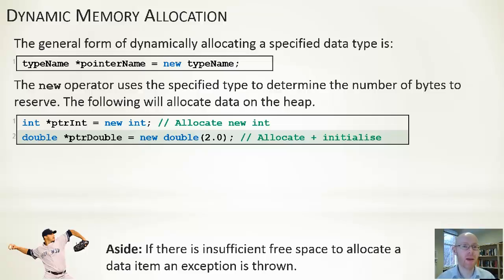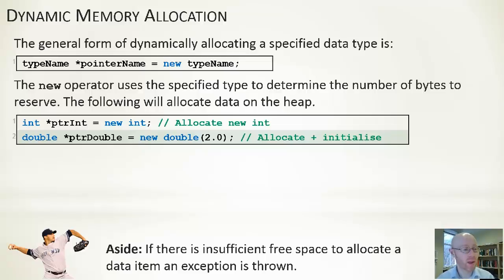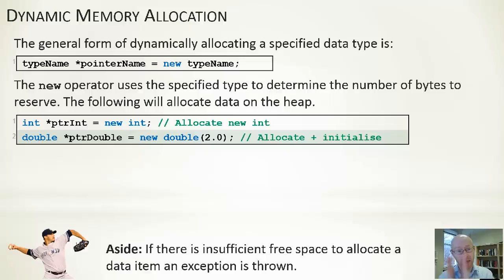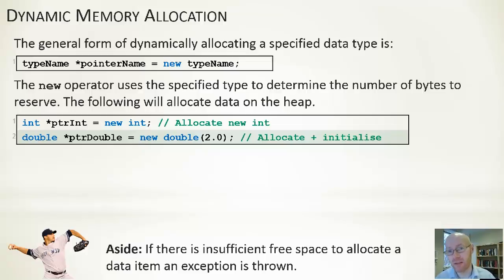Initializing memory is important. Whenever we go to the heap and ask for a chunk of memory, it'll come with some ones and zeros from whatever the default memory was. If it's important that data has certain starting values, we as the programmer need to make sure we do that initialization. At the bottom, if there's insufficient free space to allocate the data, you'll get an out of memory exception — that happens if the heap collides into the stack and all free memory has been exhausted.